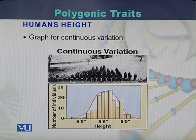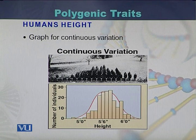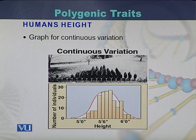The best example of a polygenic trait is human height. Human height is controlled by more than one gene. There are many genes involved in controlling height within humans.